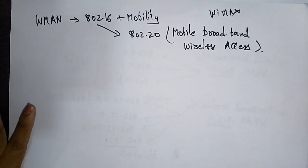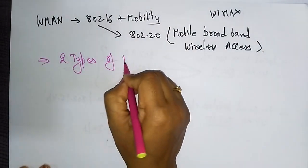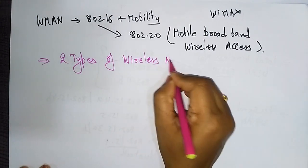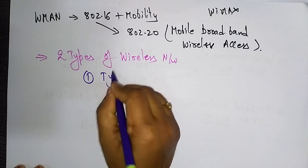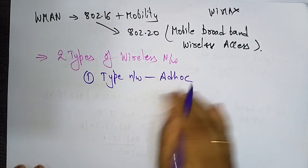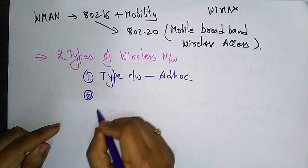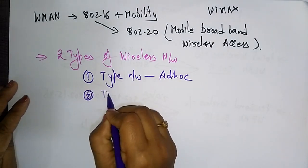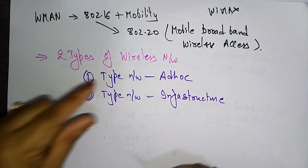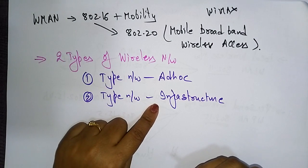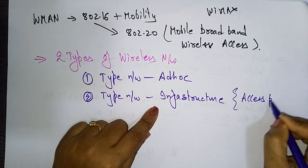There are two types of wireless networks. The first one is the ad hoc network, where stations communicate directly without any infrastructure. The second type is the infrastructure network, where stations communicate through an access point.